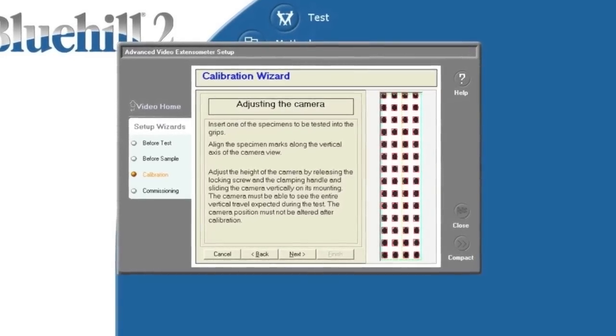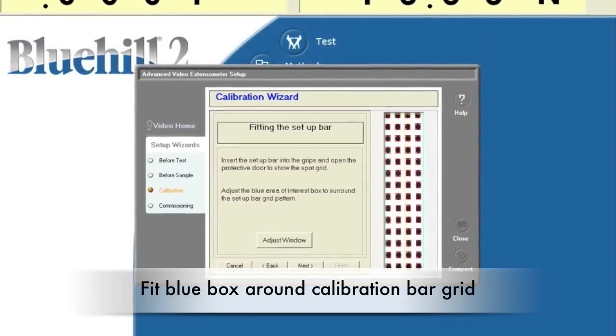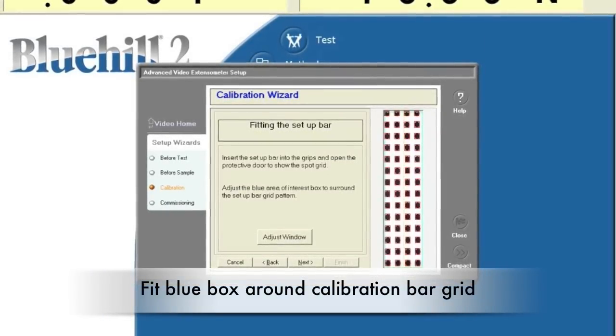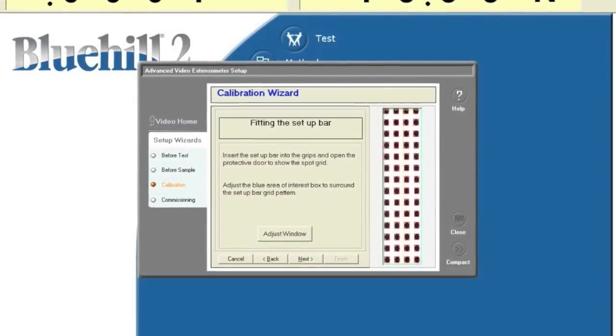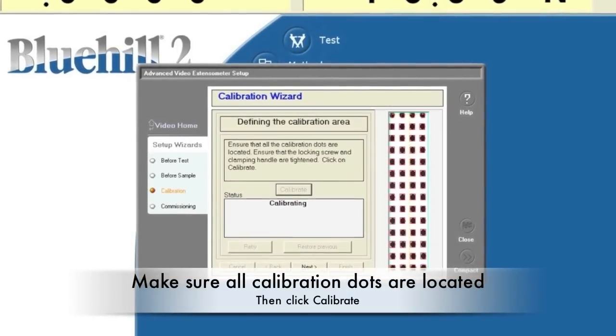Loosen the handle and screw to move the video extensometer up and down. Open the calibration bar's protective window to show the spot grid. Move the blue box to fit around the calibration bar grid. Make sure that all calibration dots are located with red boxes and click on calibrate.